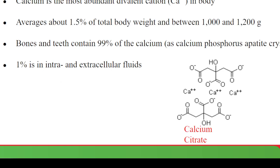Calcium is one of the most abundant divalent cations — it has a double charge in its ionic form. On average, about 1.5 percent of the total body weight is calcium, amounting to between 1000 and 1200 grams in the whole body. Calcium is found inside the bones, teeth, bloodstream, and even in muscles.